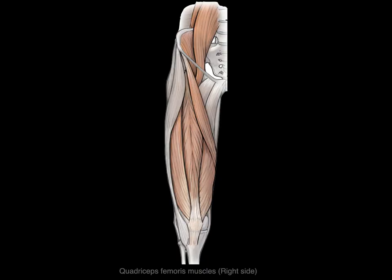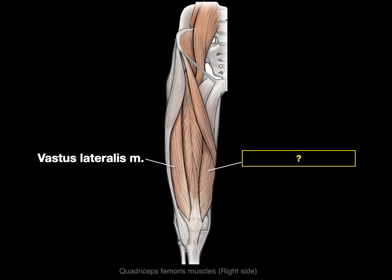If we call this muscle of your quads the vastus lateralis, what do we call this one? Well, vastus means big and lateralis means to the side. So we then call this one the vastus medialis — the really big muscle on the medial surface.